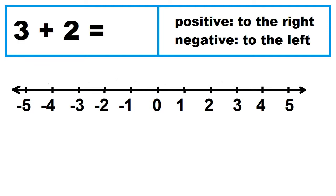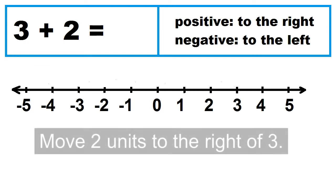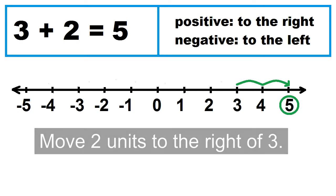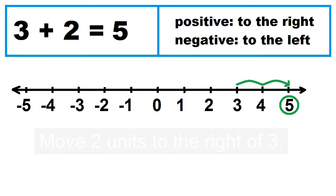Example: 3 plus 2. Move 2 units to the right of 3 — 1, 2. 3 plus 2 equals 5.